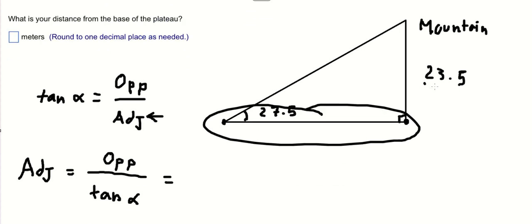The opposite side is 23.5, and alpha is 27.5 degrees.